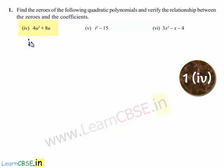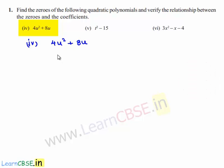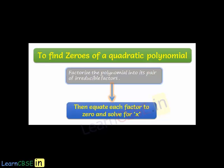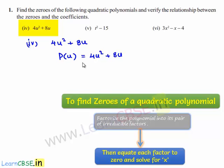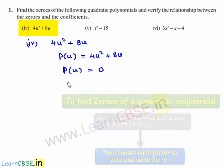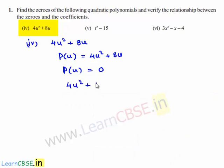Coming to the fourth bit, which is 4u squared plus 8u. Let us write down the polynomial P of u is equal to 4u squared plus 8u. In order to find the zeros of the polynomial, let us equate the given polynomial to 0, that is 4u squared plus 8u is equal to 0.